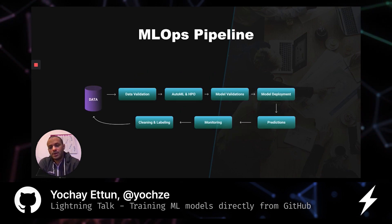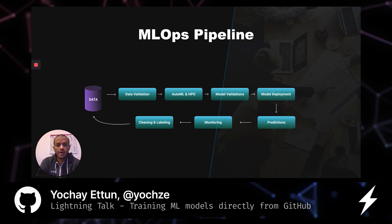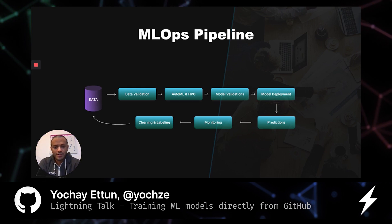You start with data, you do some sort of data validation, you train the model on a remote GPU or a specific cluster that you have, you run model validation, you deploy the model, you're doing predictions, you monitor predictions, and then you might even retrain the model based on that.